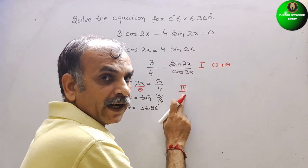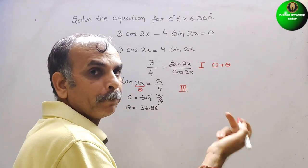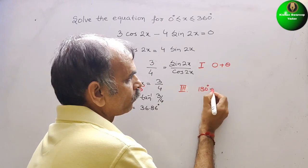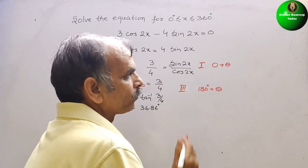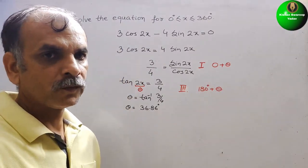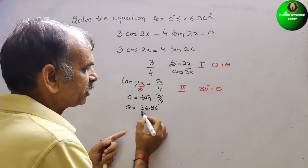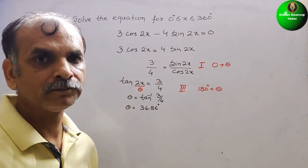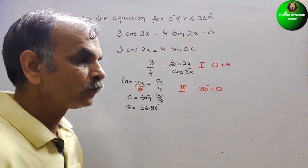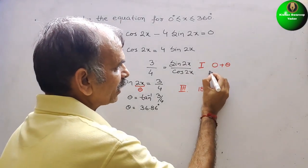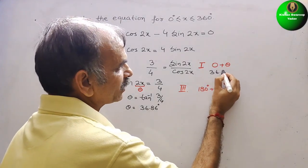Third quadrant, how we are writing? 180 degree plus theta. Now see what it will be. Theta is 36.86, so here it will be 36.86 degree.